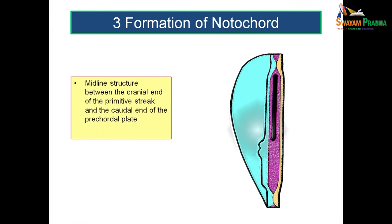Now let us see the formation of notochord. The notochord is the midline structure between the cranial end of the primitive streak and the caudal end of the precordal plate. Taking a section of the disc and looking at the mesodermal layer, you can see a rod-like extension in the middle along the midline. This is the notochordal process or head process — the first stage of development of notochord.